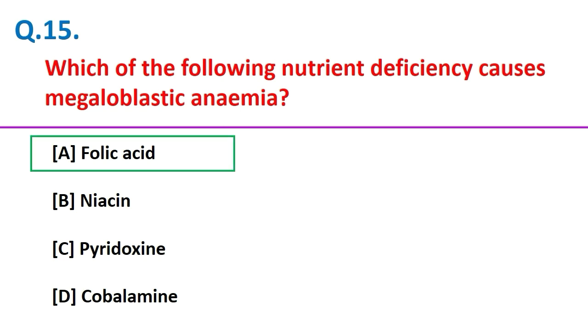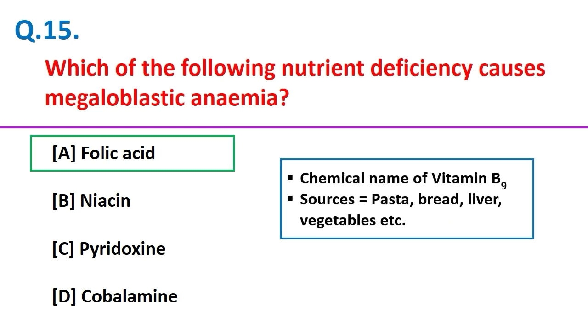Which of the following nutrient deficiencies causes megaloblastic anemia? Folic acid. Friends, folic acid is the chemical name of vitamin B9, and good sources are pasta, bread, liver, vegetables, etc.